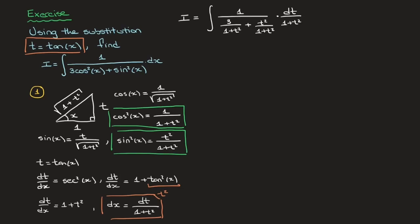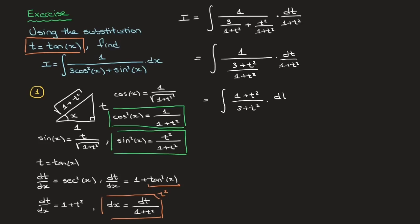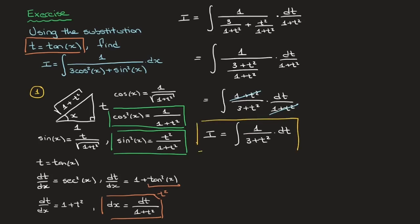To finish the first step properly, we need to write this in its simplest form. Taking care of the denominator, this equals the integral of 1 over (3 plus t squared) over (1 plus t squared), times dt over 1 plus t squared. That equals the integral of 1 plus t squared over 1 plus t squared — and we see that the 1 plus t squared terms cancel — leaving us with I equals the integral of 1 over 3 plus t squared. That's step one done.